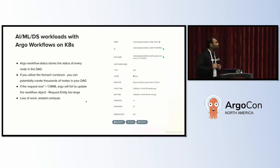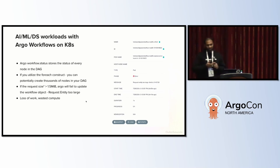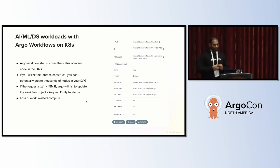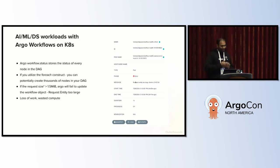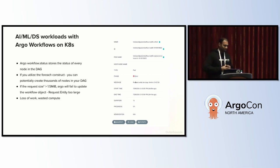Let's talk about what happens when you have really large workloads unable to fit in etcd. The Argo workflow status stores the status of every node in the DAG. If you use the for-each construct, it's easy to have many statuses updated on etcd, at which point Argo will throw an error: 'request entity too large — unable to update the object.' Remember, this error does not happen immediately; it's a runtime error. You may have gone through hours of computation before seeing this — you've wasted, say, six hours of compute and then your workload fails.